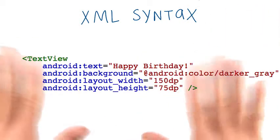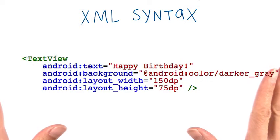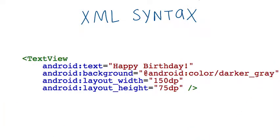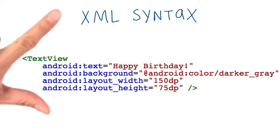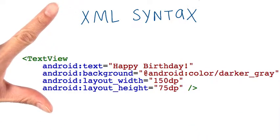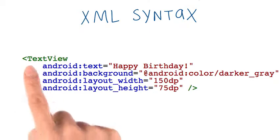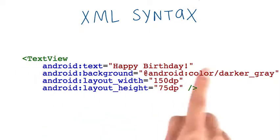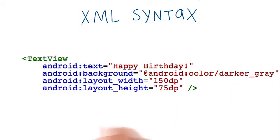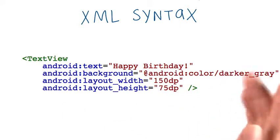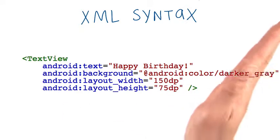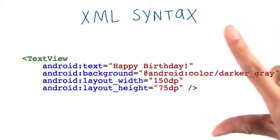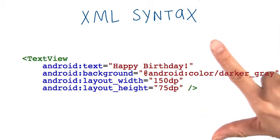There's a lot of symbols and characters here. To help you remember it, you can think of an opening angle bracket — ding — and then the view name — whoosh — and then the attributes — pew, pew, pew, pew. And then the forward slash, and then the closing angle bracket — boom.